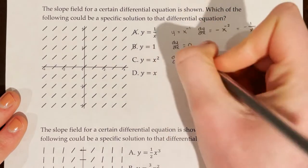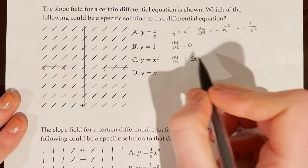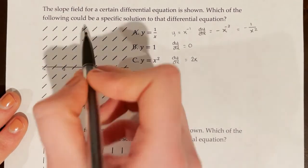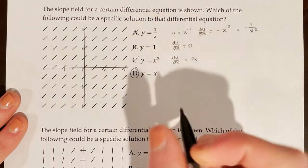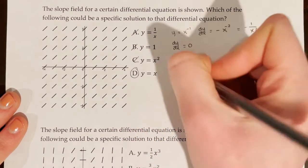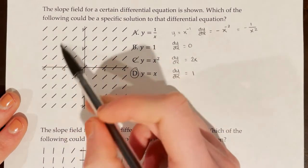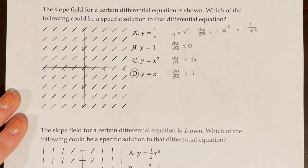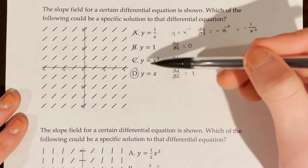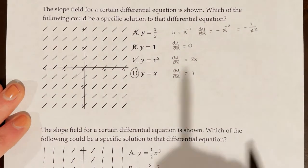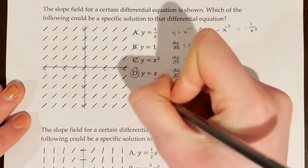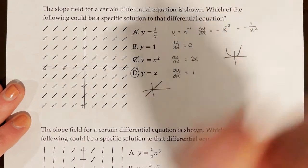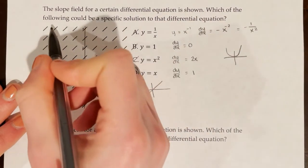For choice C: y = x², so dy/dx = 2x. When x = 0, dy/dx = 0. But along x = 0 we see non-zero slopes on the graph, so C is incorrect. Choice D: y = x, so dy/dx = 1 everywhere — a constant slope of 1. This matches the graph, where every tangent line has slope 1. A shortcut: you can graph each equation and see which matches the shape of the slope field. y = x matches; y = x² (a parabola) clearly does not.